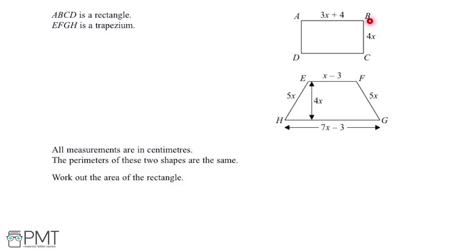ABCD is a rectangle and EFGH is a trapezium. All measurements are in centimeters and the perimeters of these two shapes are the same. The aim of the question is to work out the area of the rectangle, and this is for five marks.